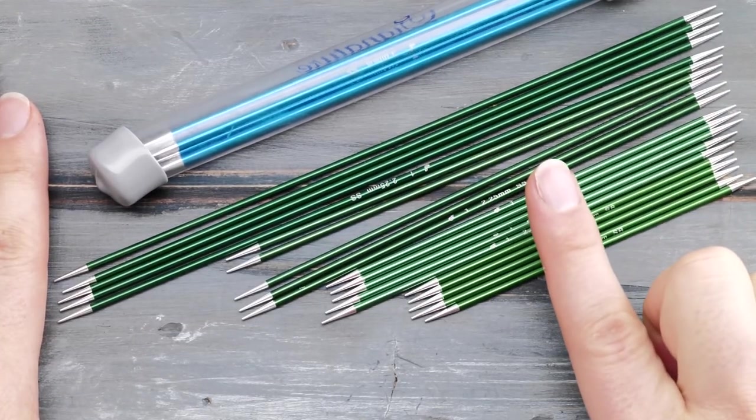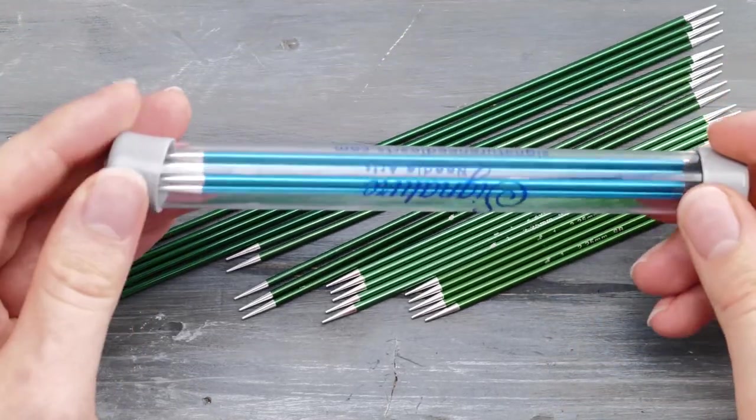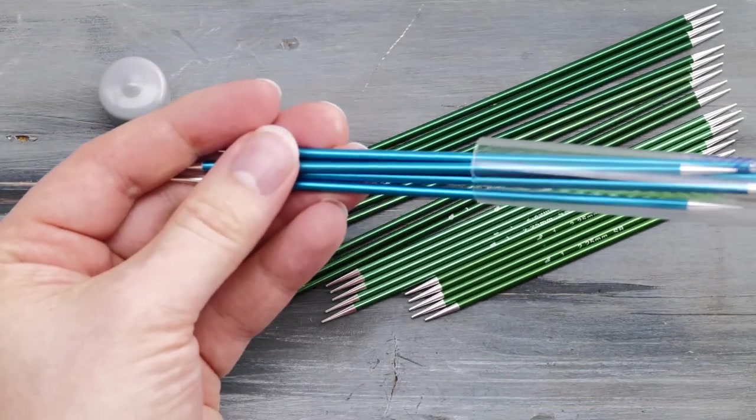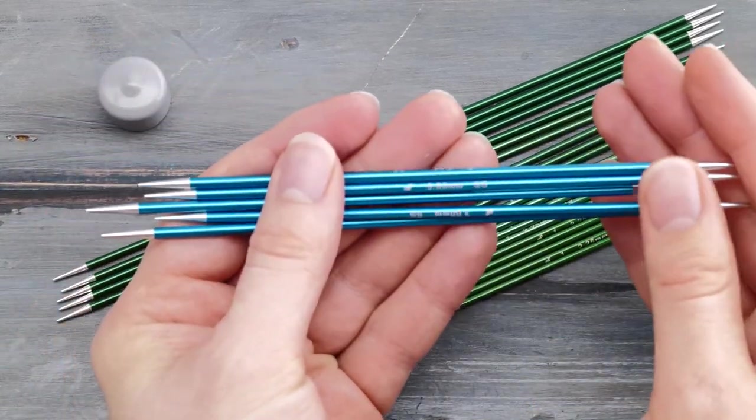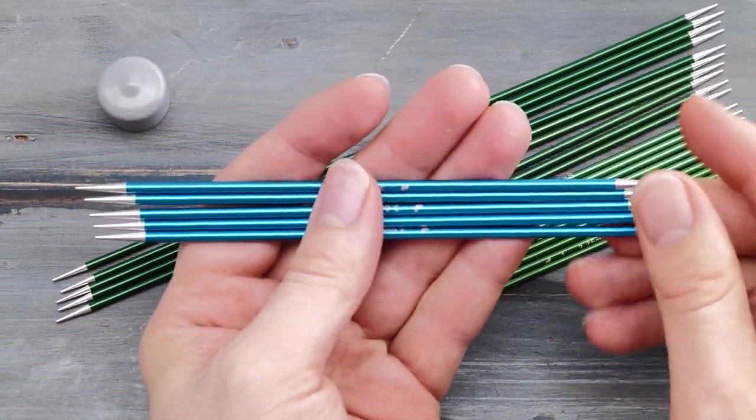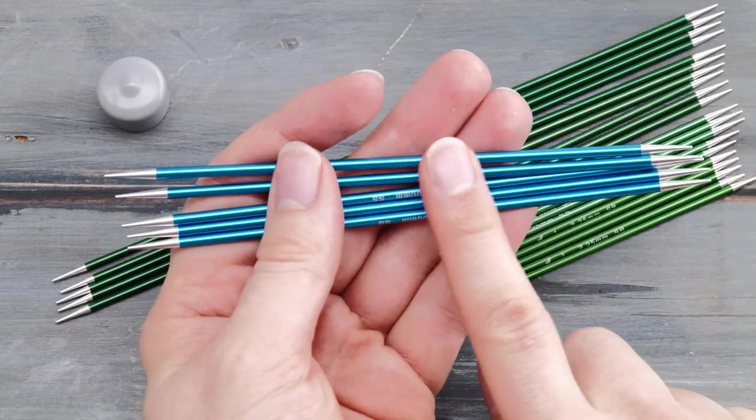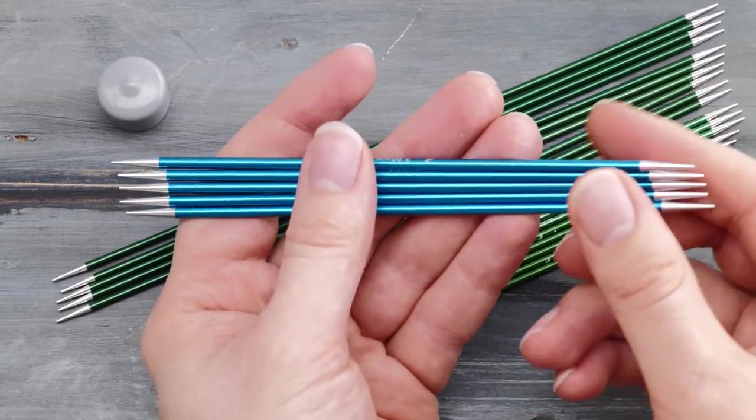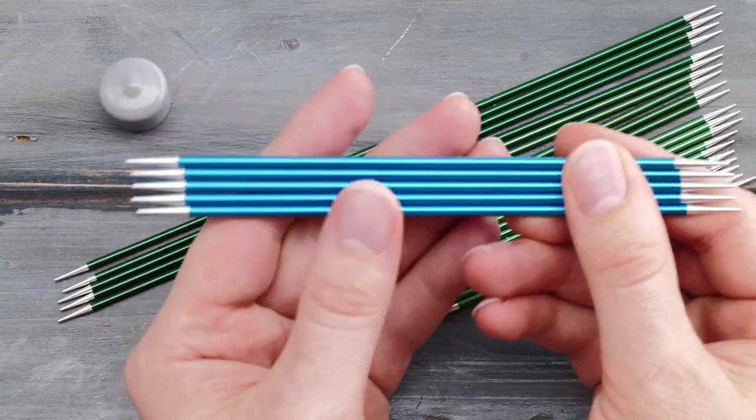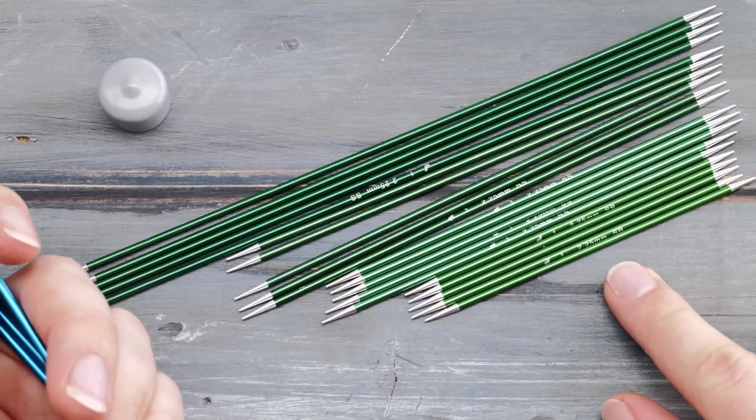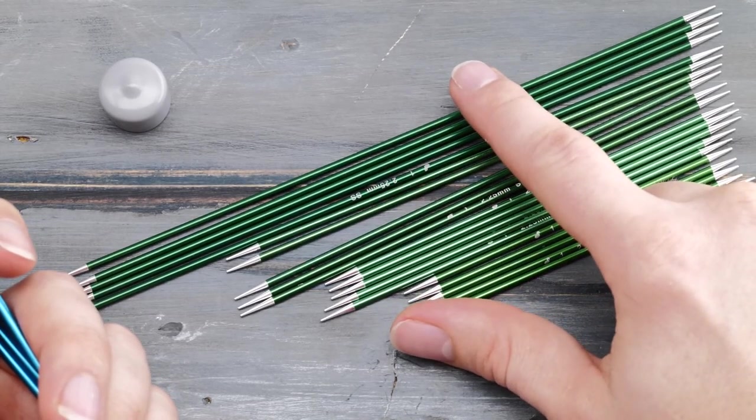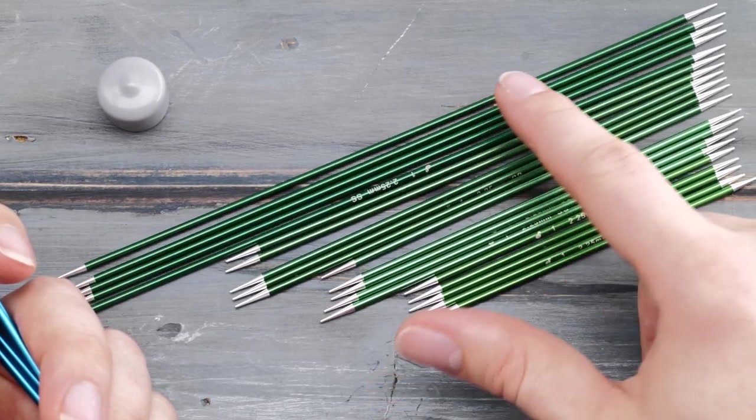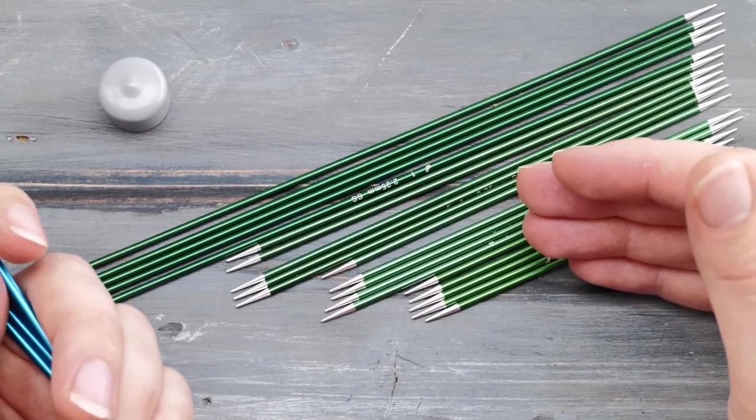Let's take a look at the signature Needle Arts double-pointed knitting needles next. As you can see, they come in these handy little plastic tubes. These are airtight. I mean, aluminum doesn't oxidize. But still, this makes storing these needles rather easy. The basic construction remains the same. You have these colorful aluminum bodies and then these polished stiletto sharp tips on either end. As you can see, they come in four different lengths. You have four inch, five inch, six inch, and even eight inch double-pointed knitting needles.